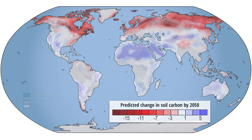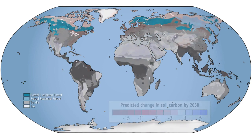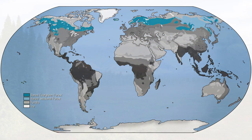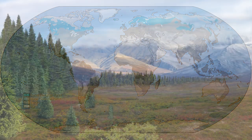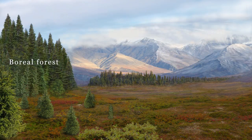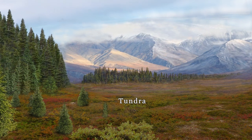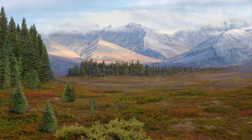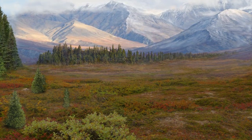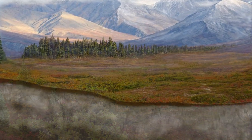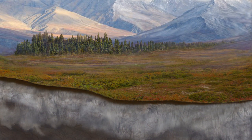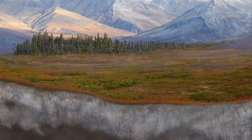The loss of carbon from Arctic soils is complicated by changes in the boundary between boreal and tundra biomes. Tundra is the northernmost biome and dominated by perpetually frozen soil, or permafrost, and on top of the permafrost is a thin layer of soil that thaws in the summer, known as the active layer.